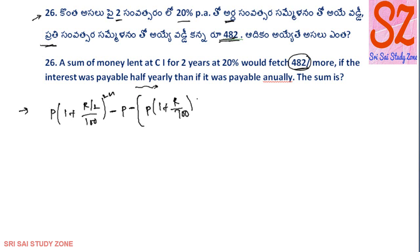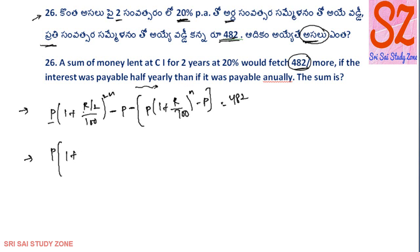We can calculate for one year. So, P into 1 plus r by 100 to the power of n minus P is equal to 480. This is the formula. So, if the formula is equal to m plus r by 2, what is the value of r? The value is 20. So we can calculate this for one year and calculate the principal amount. P into 1 plus r, and then 20, r by 2 is equal to 10 by 100 to the power of 2. This will be 2 years later, 4 times — to the power of 4.